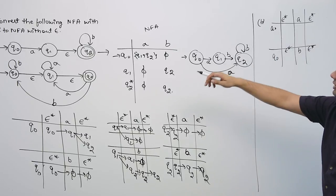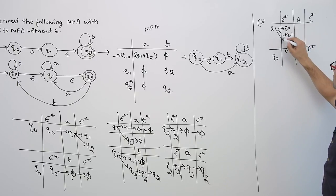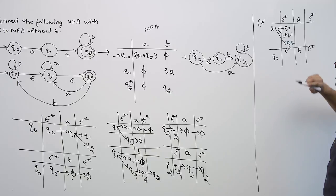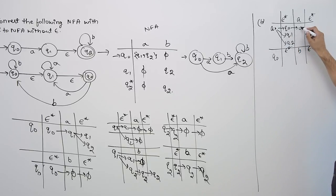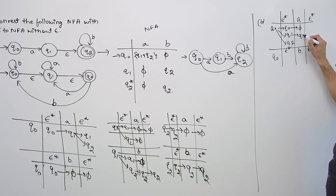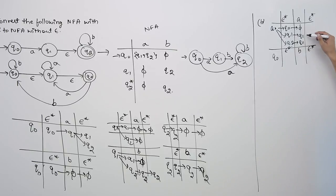For Q0: by seeing epsilon we can go to Q0, Q1, and Q2 — so epsilon closure of Q0 is {Q0, Q1, Q2}. On seeing symbol A: on Q0 we are not making any transition; on Q1 we go to Q1; on Q2 we go to Q1. Therefore epsilon closure of Q1 is {Q1, Q2}.